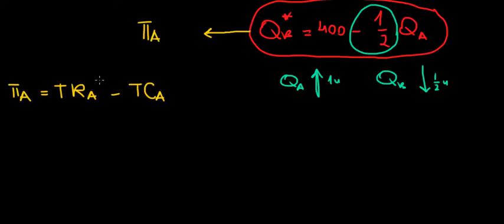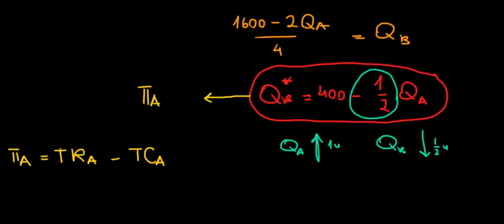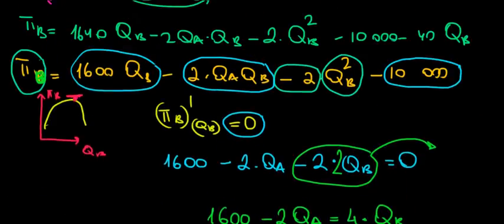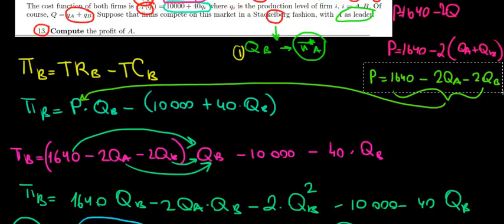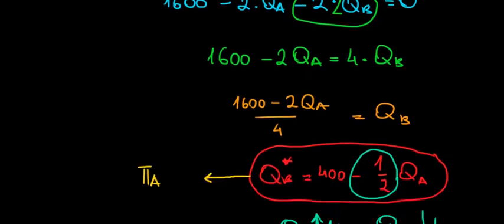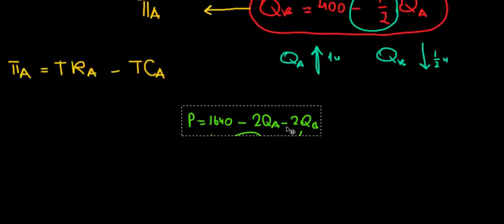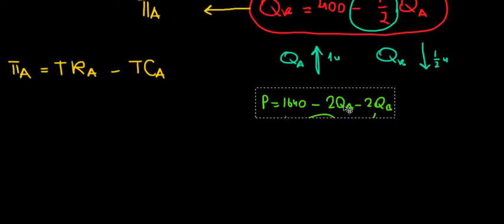To calculate the revenues we need the price function, and the cost function is given as 10,000 plus 40Q. Let's crop the price function from above to recall it later on. So this is going to be our price function.